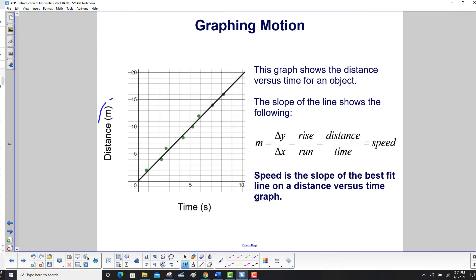This graph shows the distance versus time for an object. The slope of the line shows the following: m which is slope, delta y over delta x, rise over run, and then finally distance over time. But what is distance over time? That's speed.